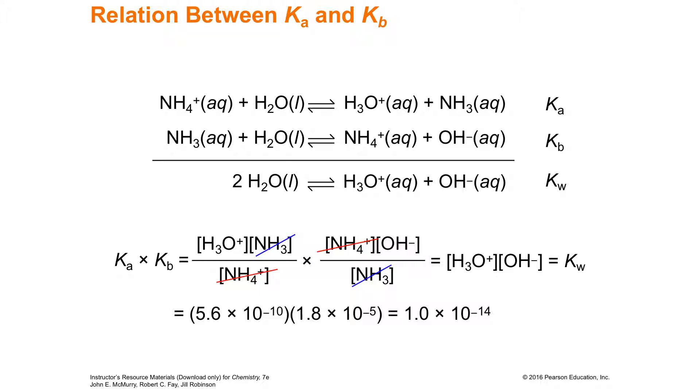So your K sub A is just the equilibrium constant of that acid. K sub A is the concentration of hydronium times the concentration of ammonia over the concentration of ammonium. Remember, the water doesn't play because it's liquid.